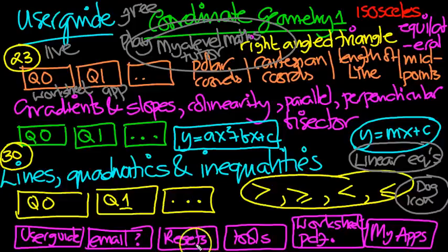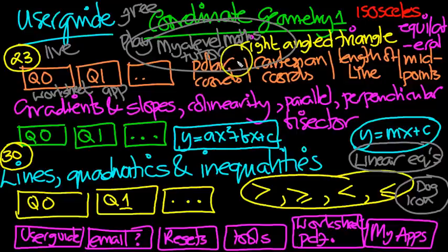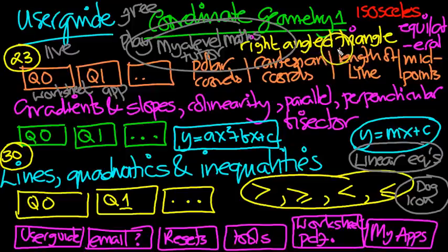It's very simple and straightforward. The first topic in coordinate geometry looks at polar coordinates, Cartesian coordinates, length of line, midpoints, lots of little topics here.